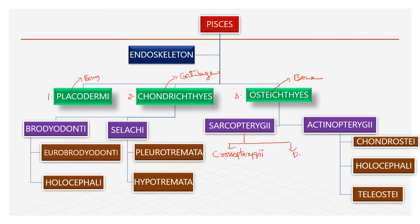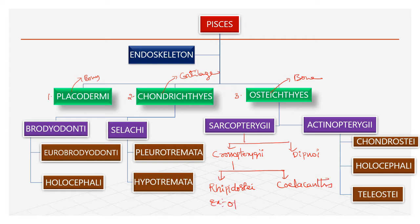Crossopterygii is divided into Rhipidistia and Coelacanthini. One of the finest examples of Rhipidistia is Osteolipids. Osteolipids are fishes which are believed to give rise to amphibians — the next class which originated from these Osteolipids. And the Dipnoid group has lung fishes.